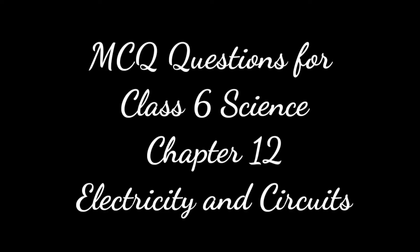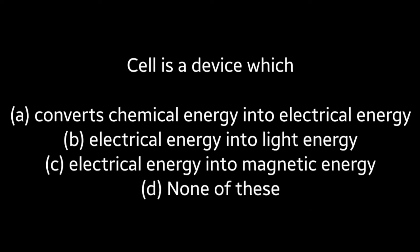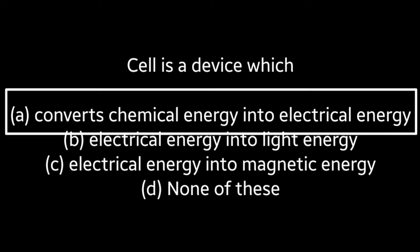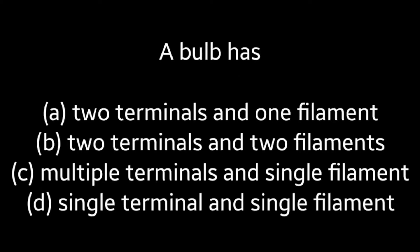Today we are going to be discussing the MCQ questions of Class 6 Science Chapter 12, Electricity and Circuits. First question: A cell is a device which converts (A) chemical energy into electrical energy, (B) electrical energy into light energy, (C) electrical energy into magnetic energy, (D) none of these. Answer is Option A: converts chemical energy into electrical energy.